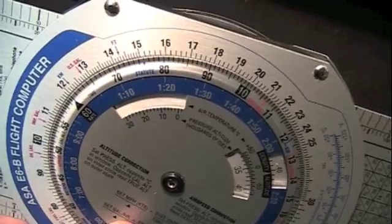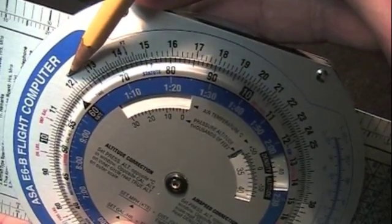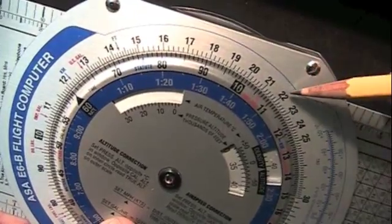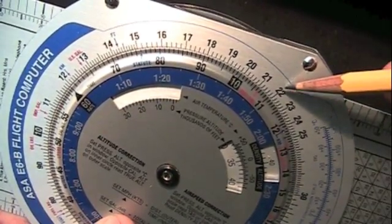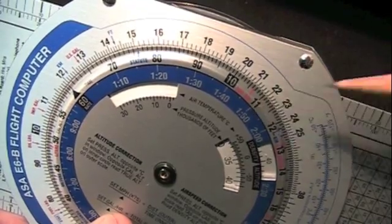Let's look at another example. Say you want to travel at a rate of 120 knots for a distance of 220 miles. Your time in route would be 110 minutes or 1 hour and 50 minutes.